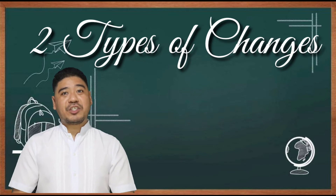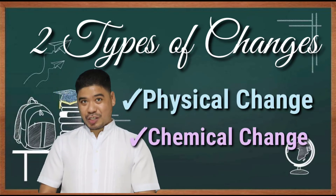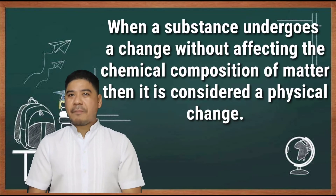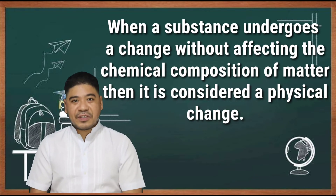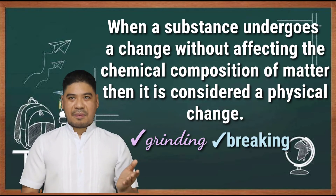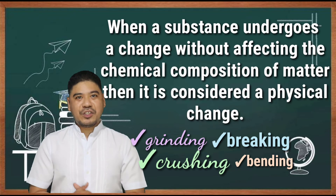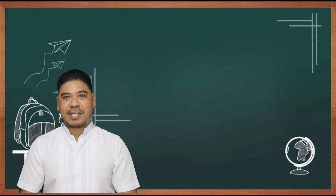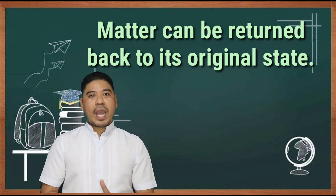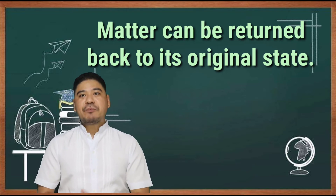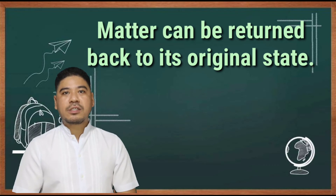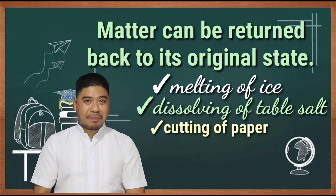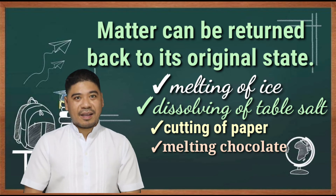There are two types of changes: physical change and chemical change. When a substance undergoes a change without affecting the chemical composition of matter, it is considered a physical change. Grinding, breaking, crushing, bending, and changes in the state of matter are examples of physical changes, which are reversible — matter can be returned back to its original state. Examples include melting of ice, dissolving of table salt, cutting of paper, melting chocolate, bending of metals, and the water cycle.